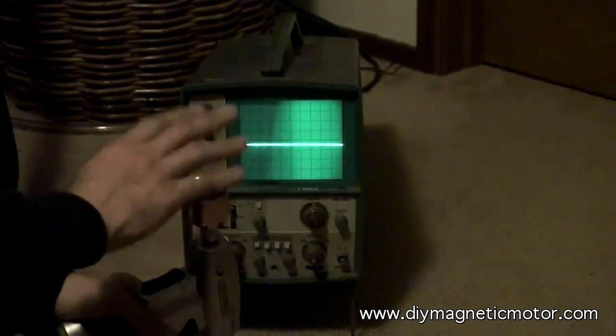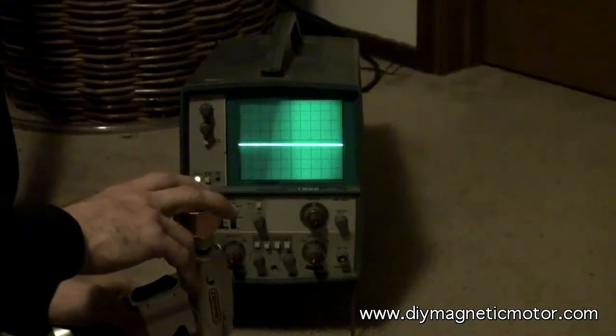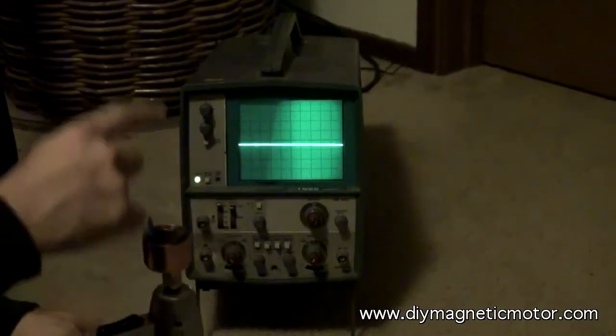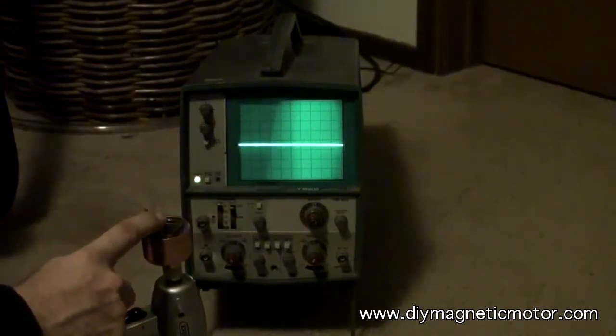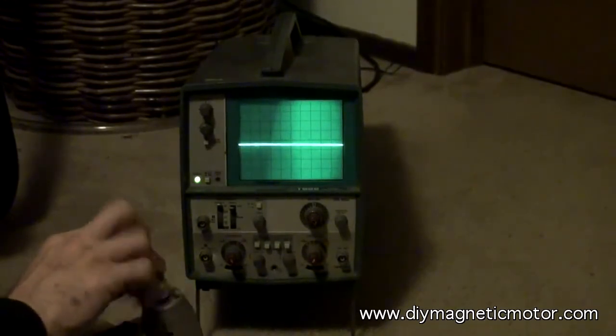So in essence, we can measure the magnetic frequency that an angular magnet is spinning. Depending on the size of the magnet will equal the note. But it's not an audio frequency, it's a magnetic frequency. It's the negative.